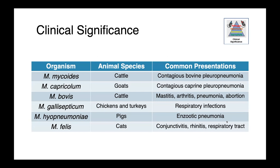With respect to clinical significance: Mycoplasma mycoides causes contagious bovine pleuropneumonia in cattle, and Mycoplasma capriculum causes a similar disease in goats — both important foreign animal diseases. Mycoplasma bovis causes a wide variety of clinical presentations in cattle including mastitis, arthritis, pneumonia, and abortion. Gallosepticum is associated with respiratory tract infections in chickens and particularly turkeys. Hyopneumoniae is associated with enzootic pneumonia in pigs. And Mycoplasma felis causes upper respiratory tract infections in cats, from conjunctivitis and rhinitis down to potentially pneumonia.